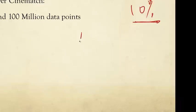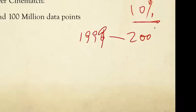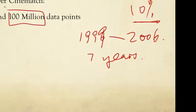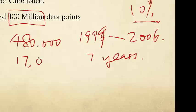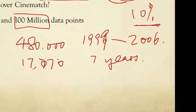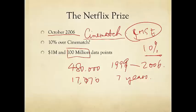Netflix had seven years of records — from 1999 to 2006 — of ratings by different users on different movies. They made available about 100 million of these ratings from 480,000 users on 17,770 movies. On average, each movie was rated by more than 5,000 users and each user rated more than 200 movies.